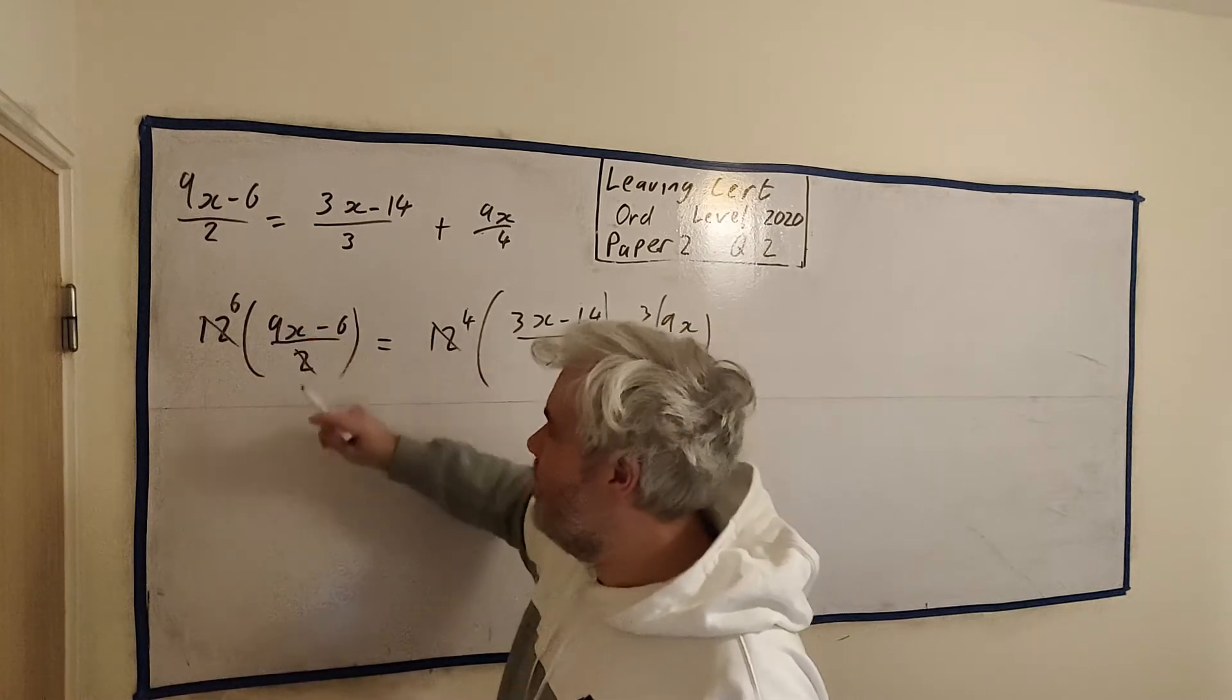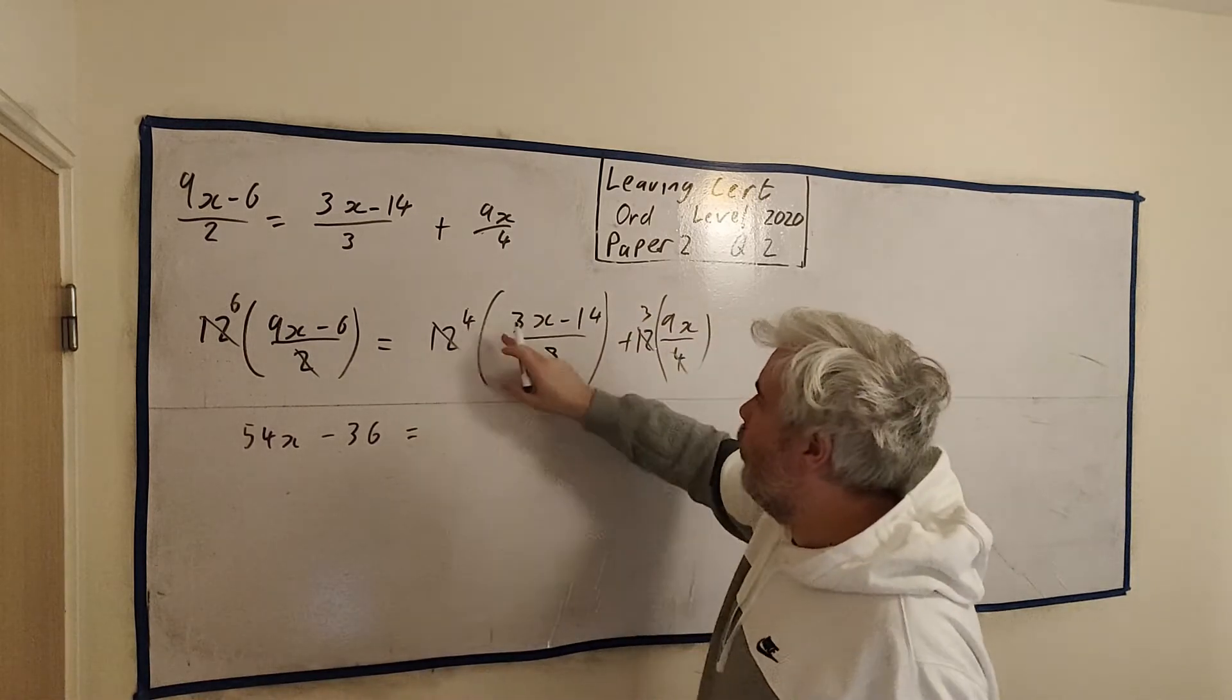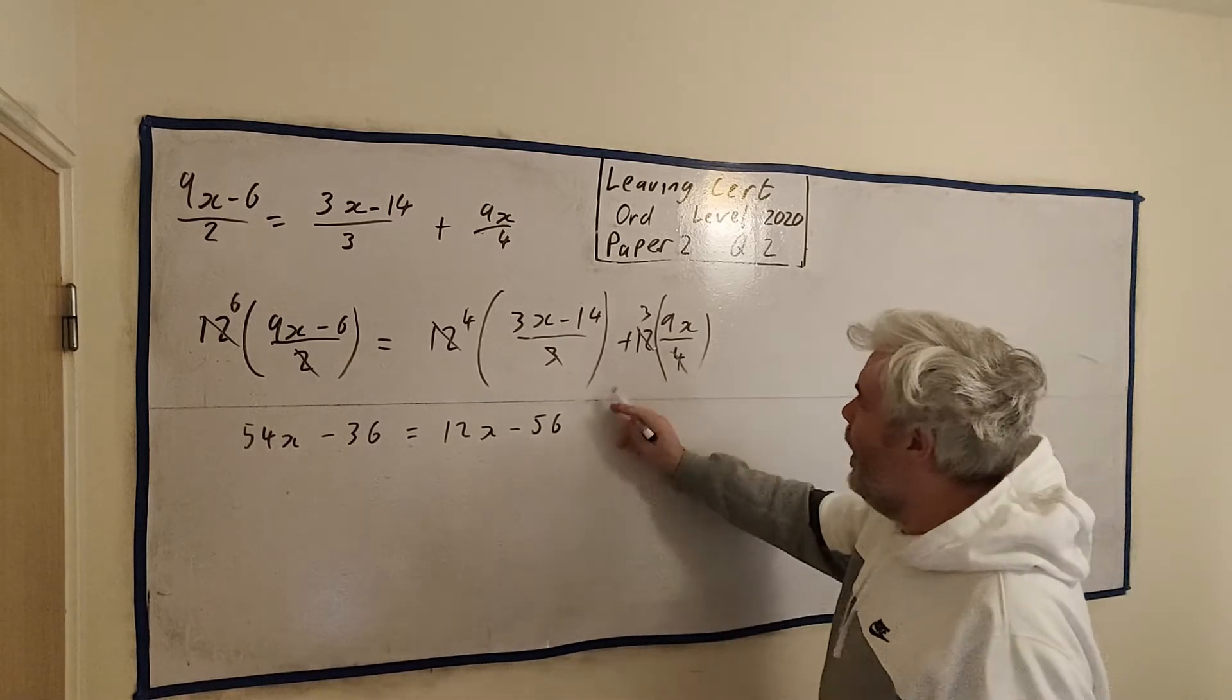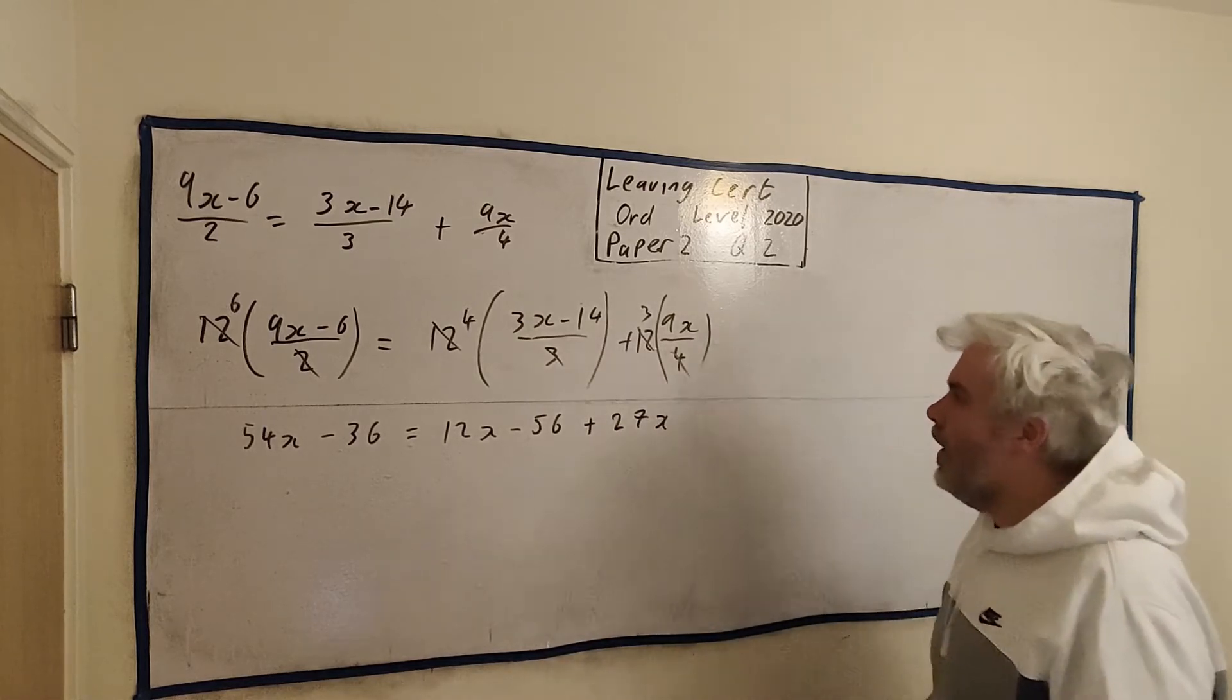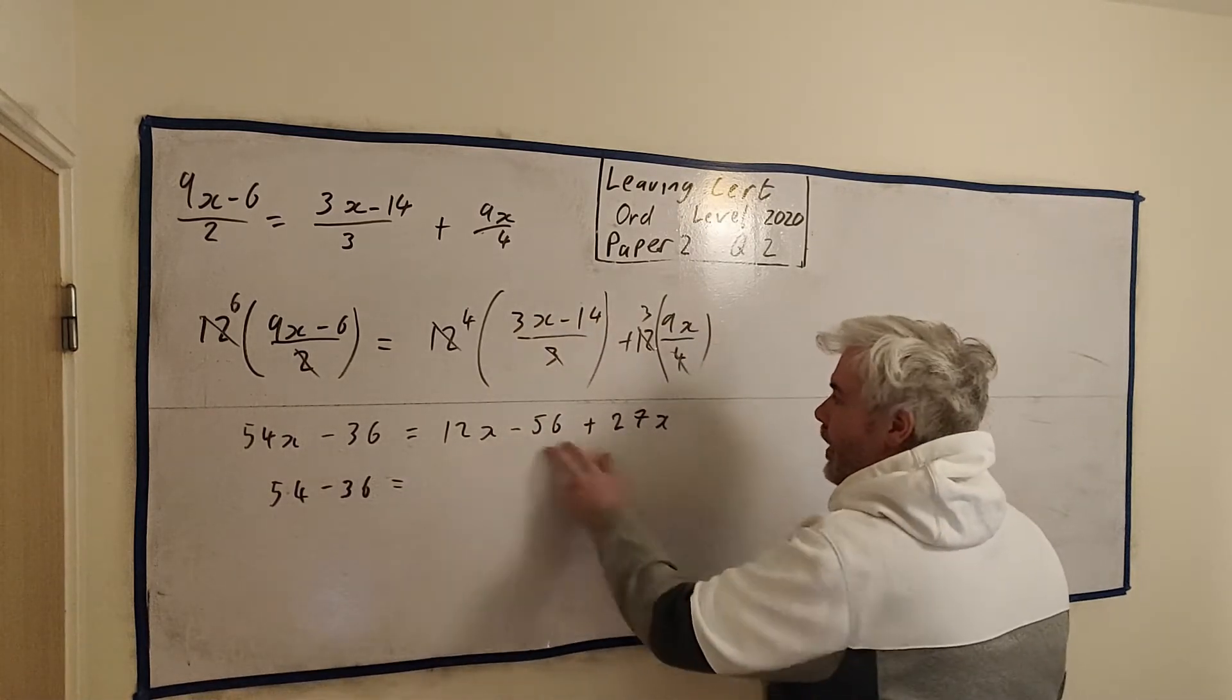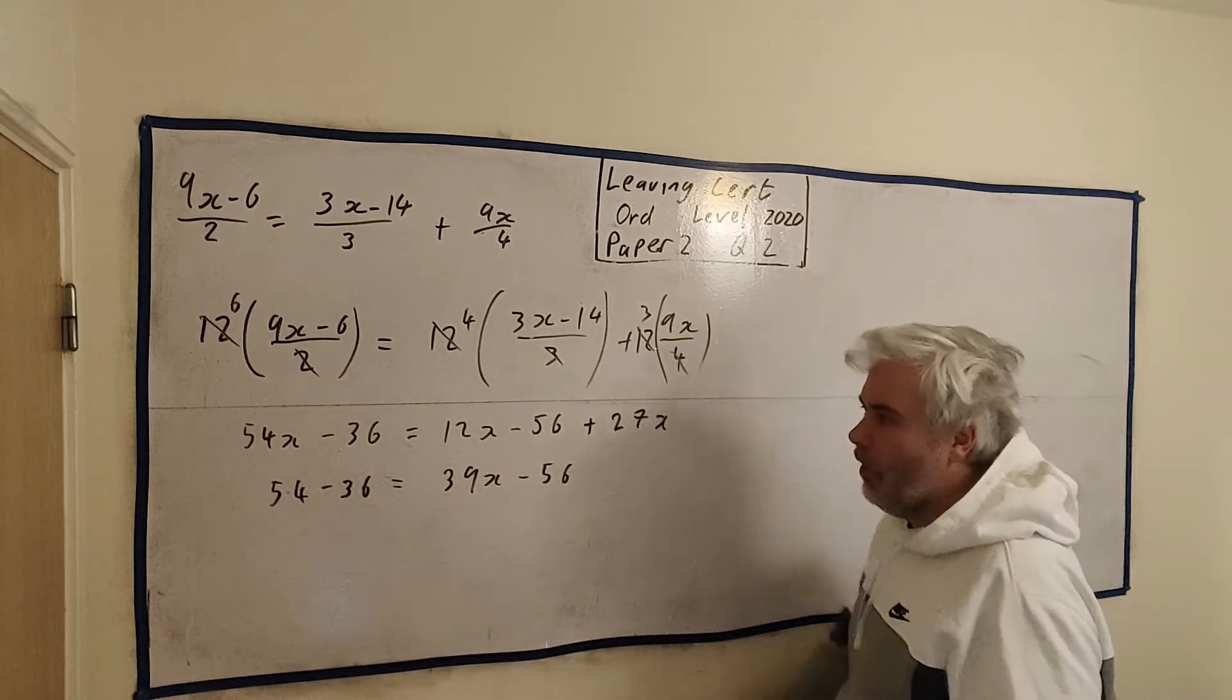Let's multiply what we have left there. 6 is still multiplying into this bracket. 6 nines, 54x. 6 times minus 6, plus times a minus is a minus, 6 times 6 is 36, equals 4 times 3x is 12x. 4 times minus 14 is minus 56. Plus 3 multiplied by plus 9 is plus 27x. Now let's get the like terms together first. 54x minus 36. And on this side, there's 2x terms, 12x plus 27x. Add them together, we get 39x minus 56.